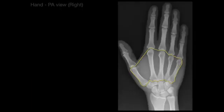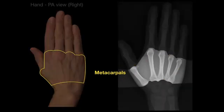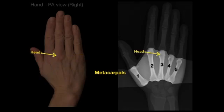Now we have a group of bones called the metacarpals, there on the back of the hand. The prefix meta means after or beyond the carpals — these are the bones after the wrist. There are five of them: one on the thumb, two, three, four, five. They're the bones you see in the palm of the hand. The head of a metacarpal is distal, forming the metacarpophalangeal joint, and the base is the one that articulates with the carpal bones.